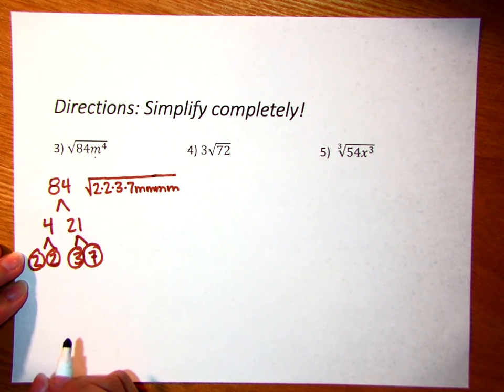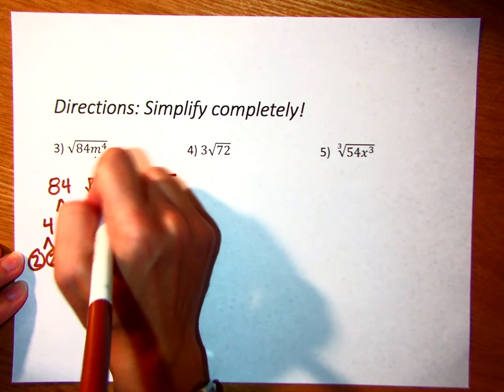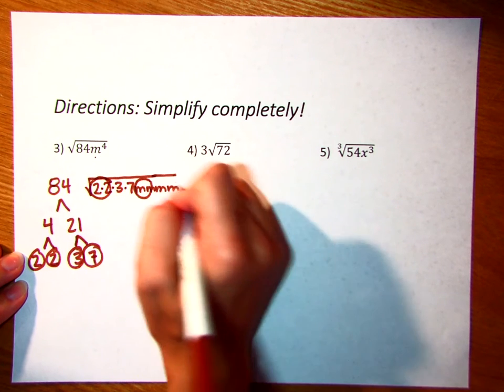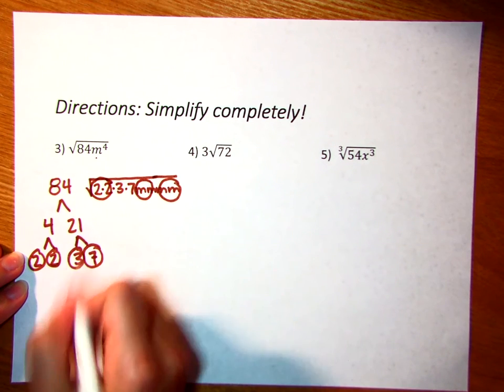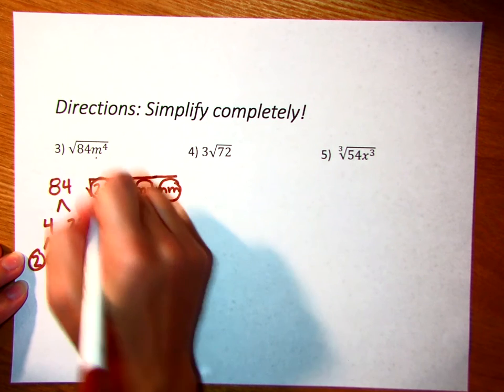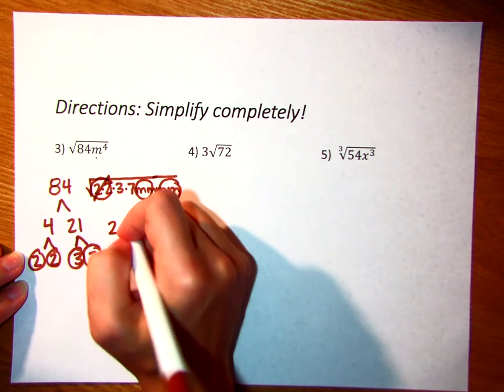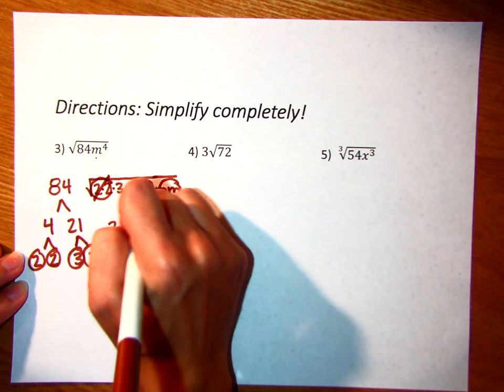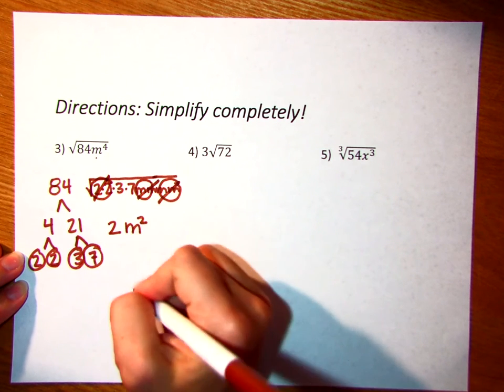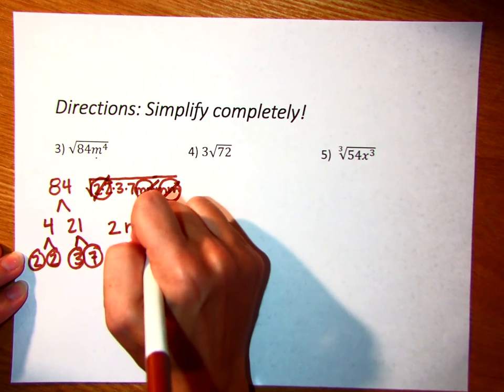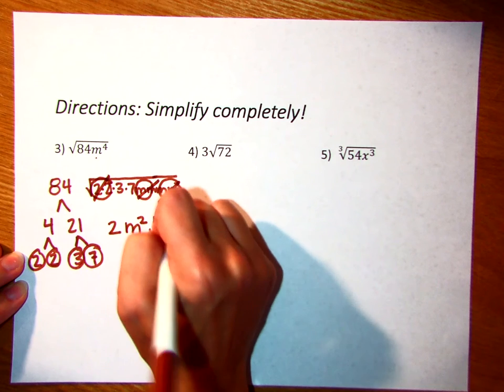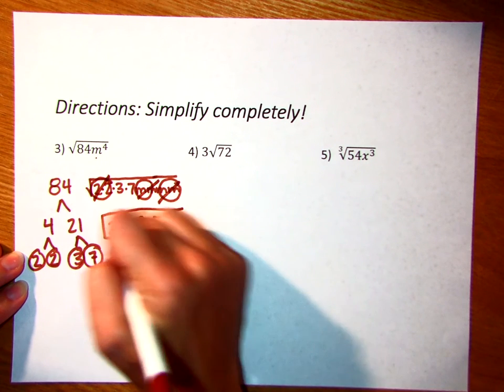Again, we're looking for pairs. So I see a pair of 2's, a pair of M's, and a pair of M's. So I'll pull out one of these 2's, we're done with that one. I'll pull out, looks like we're going to pull out one each of these M's. So we've got 2 of them in all that we're pulling out. And the only thing left inside is going to be this 3 times 7, which is 21. So that would be my final answer.